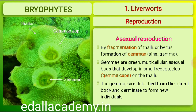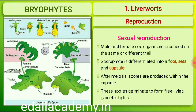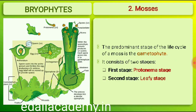The gemmae become detached from the parent body and germinate to form new individuals. During sexual reproduction, male and female sex organs are produced either on the same or on different thalli. The sporophyte is differentiated into a foot, seta and capsule. After meiosis, spores are produced within the capsule. These spores germinate to form free-living gametophytes.